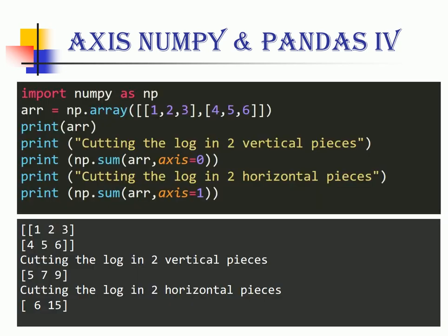Let's look at an example on how axis is used in numpy arrays. I first create a numpy array with two rows and three columns. In the first case when I say axis equal to zero, I apply the sum function on all rows of the columns.